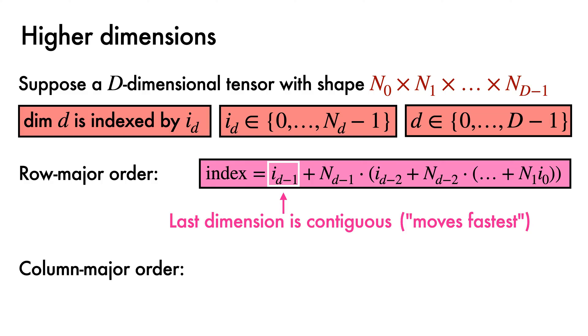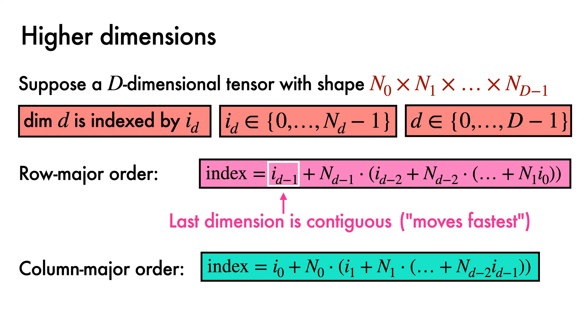For column major ordering, we get a similar looking formula, but this time it is the zeroth dimension that is contiguous and moves fastest.